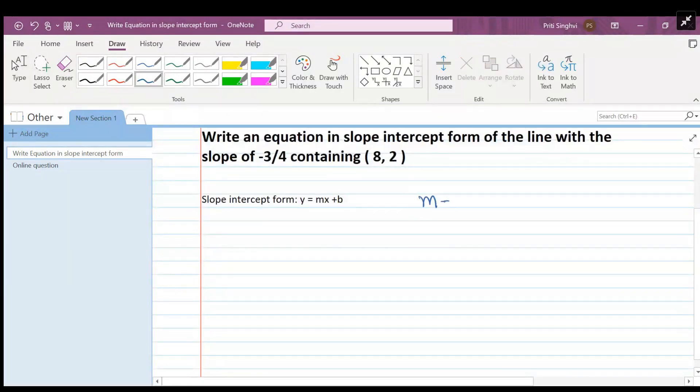The slope is already given to you in this problem, negative three-fourths, and a point which is already given as eight comma two. We're going to be using this point for the y and x values, and substitute it in to solve for b so we can write the slope-intercept form.